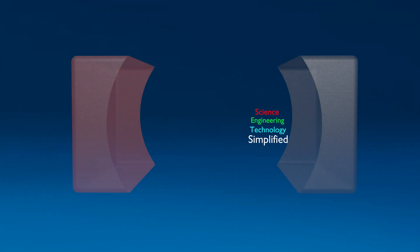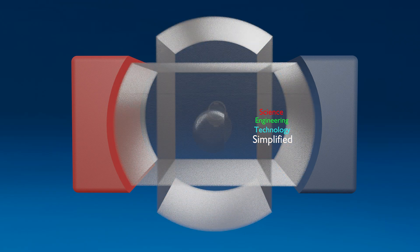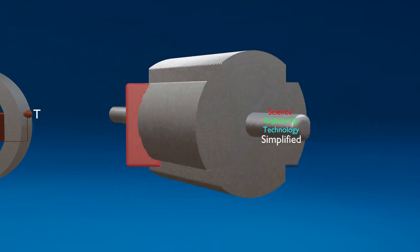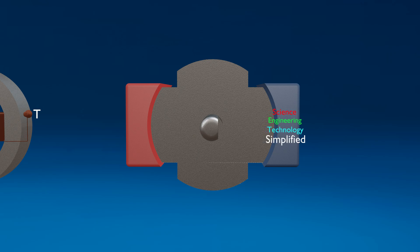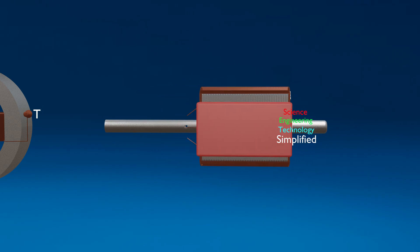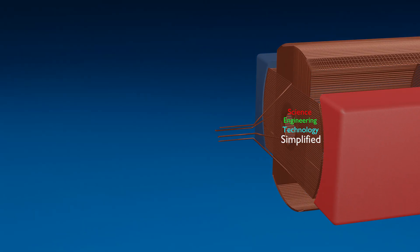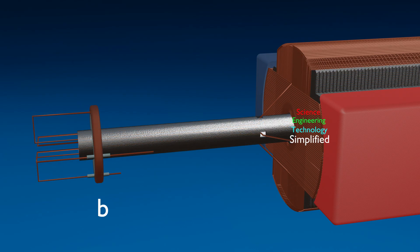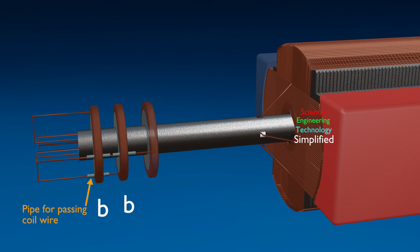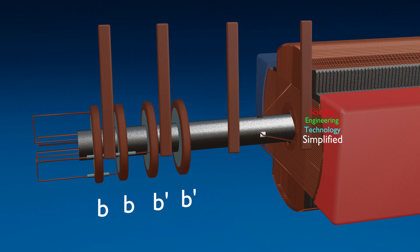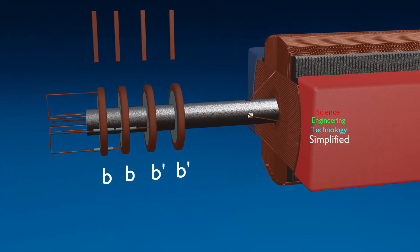Let us see the design of this AC generator. This generator has a field magnet and a cylindrical armature core, which should be split up. This armature core has two coils, B and B-. To avoid the use of a commutator, the free ends of each coil are carried through the shaft and connected to the insulated contact rings b, b, b-, b-. To convey the current to and from the ring, brushes are attached to it.